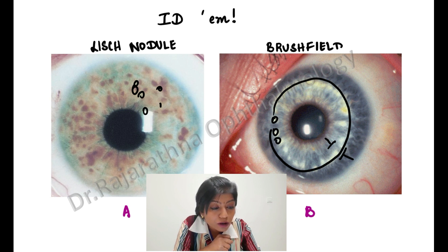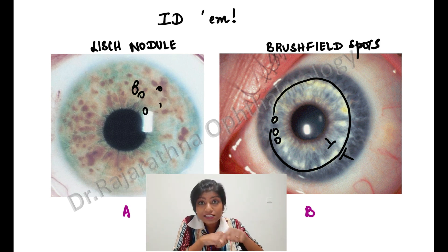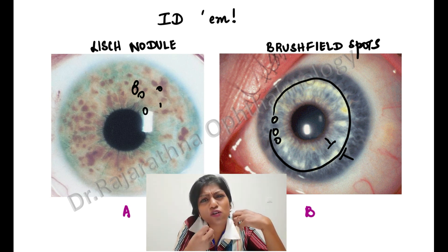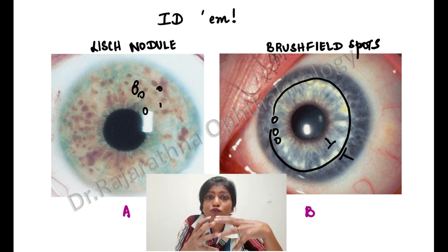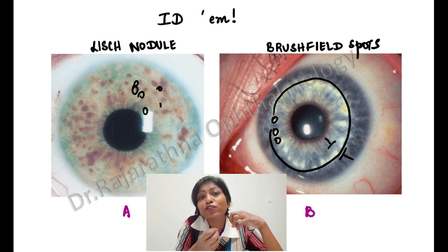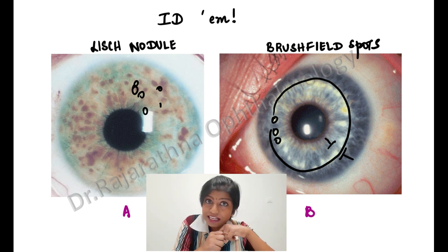B is Brushfield spots. They are white in color, arranged concentrically in a circle, and located in the middle third of the iris. They are condensed collagen which is visible through the atrophied iris — the iris normally has collagen, and it becomes condensed and visible.